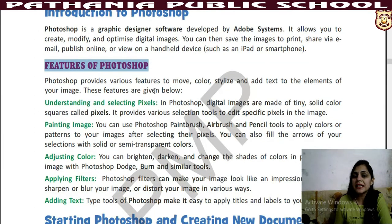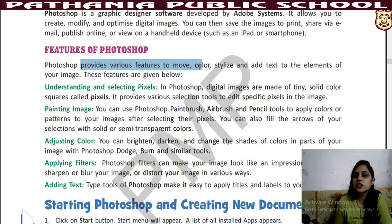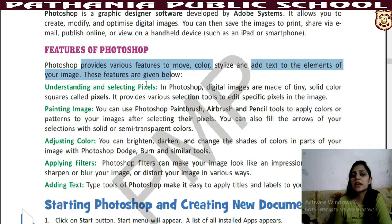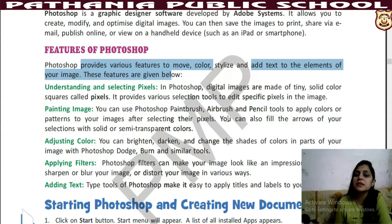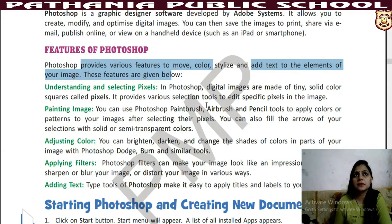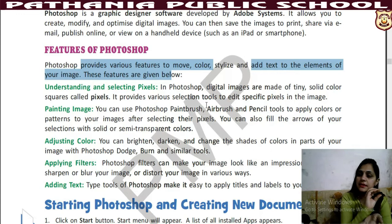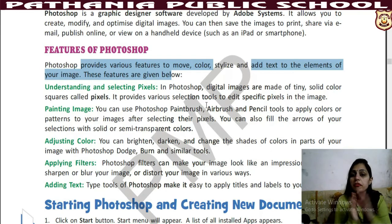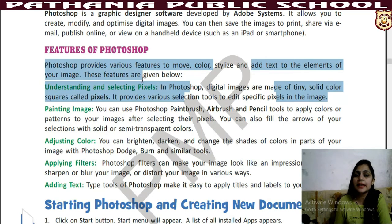These are the features — what work can we do in Photoshop. Photoshop provides various features to move, color, add styles, and add text to the elements of your image. For example, you must have seen some pics where text is written. You can add any text on a pic. Like in any marriage video, text is being added simultaneously to pics and videos. That all thing you can easily do with the help of Photoshop.